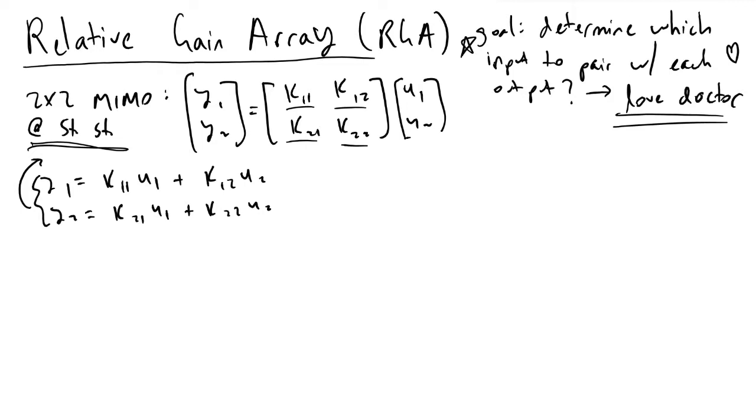The way we do that is we essentially can let s equal zero because in our frequency domain, when we're working with our process control transfer function that we derived previously, that will be what k11 is. If we let g11 evaluated at s equals zero, that tells us what k11 is. And we do the same for the other three transfer functions.